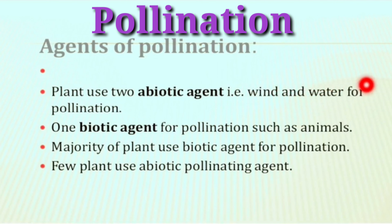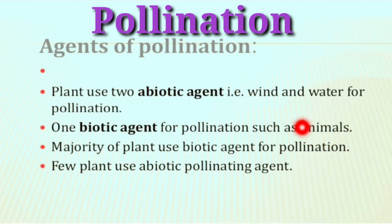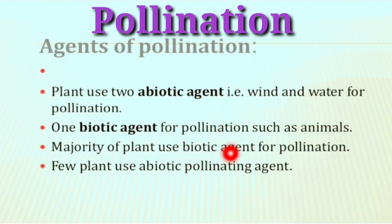In biotic agents, animals are mostly considered as biotic agents for pollination. The majority of plants use biotic agents for pollination, while only a few plants use abiotic agents.